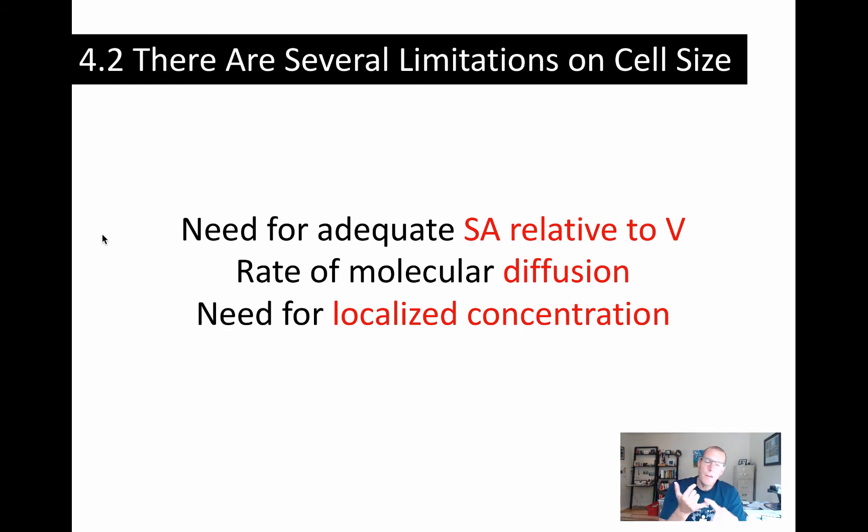First of all, cells can't get bigger than a certain size because you have to maintain an adequate surface area to volume relationship. We'll talk about that in a moment. So there's a ratio between the surface area, that's obviously the surface, the plasma membrane surface, a ratio between the surface area and the volume. We've got to maintain that sufficiently high.